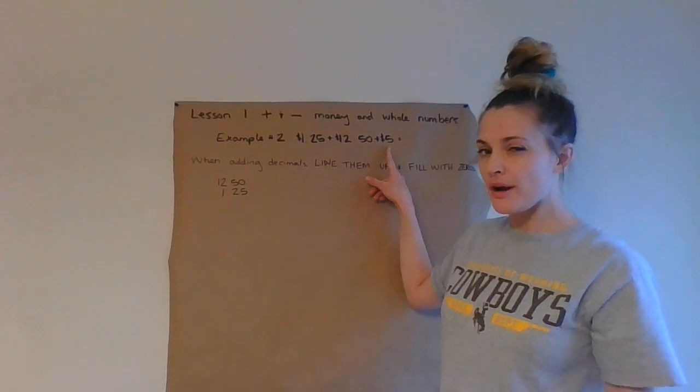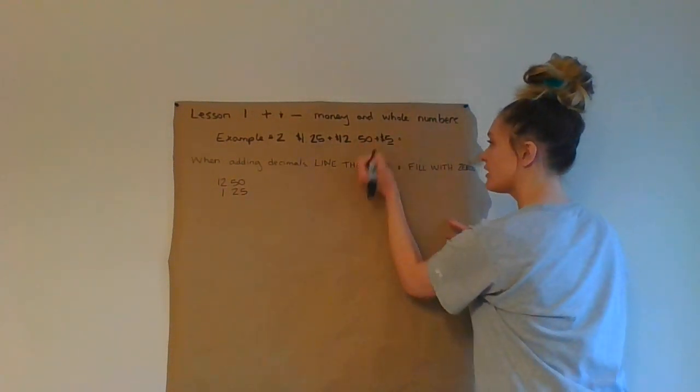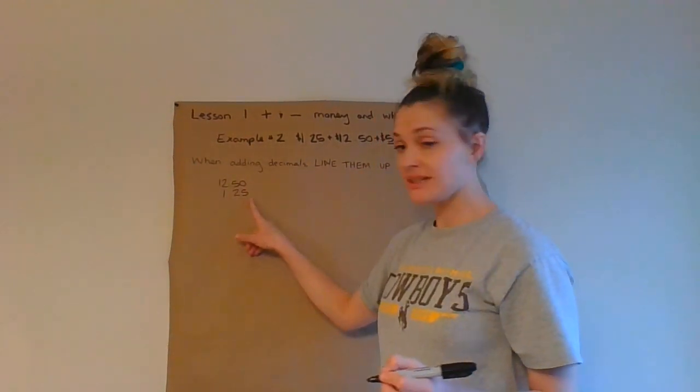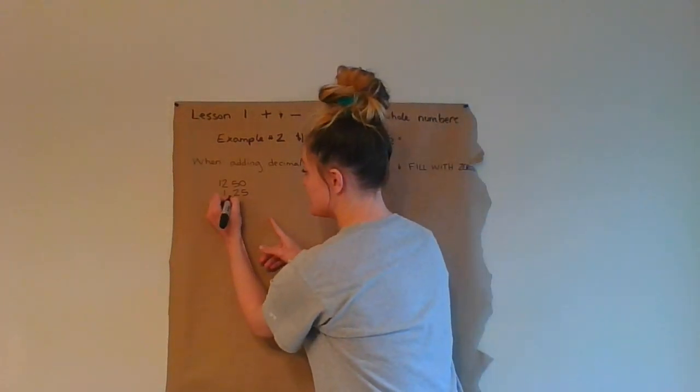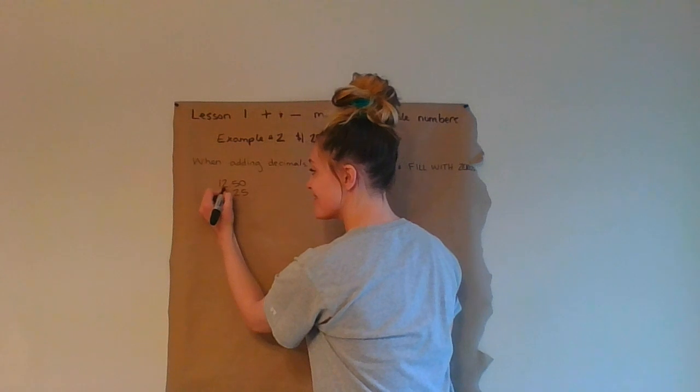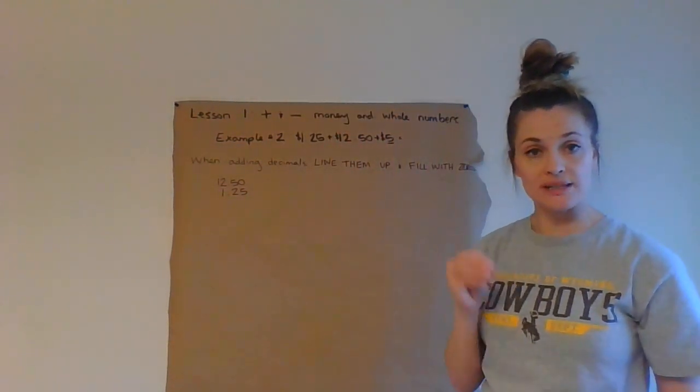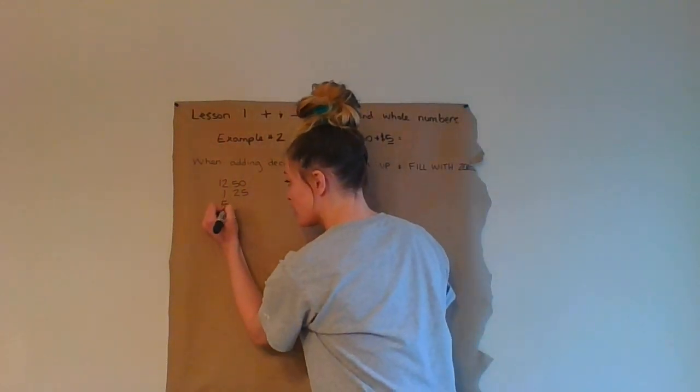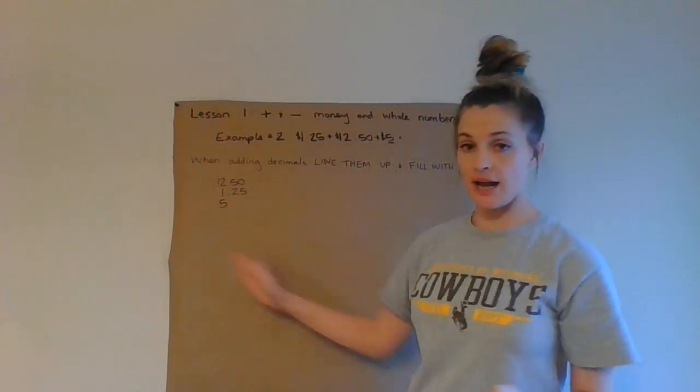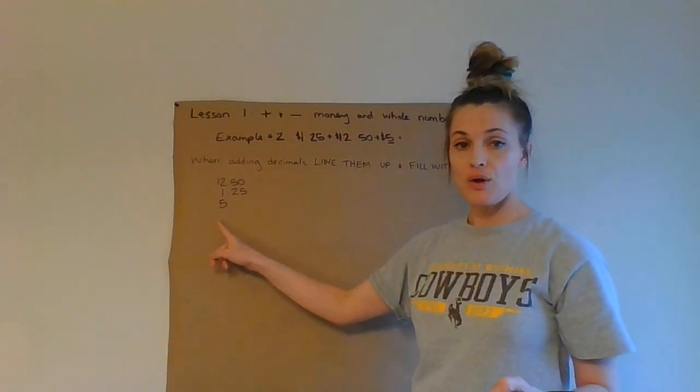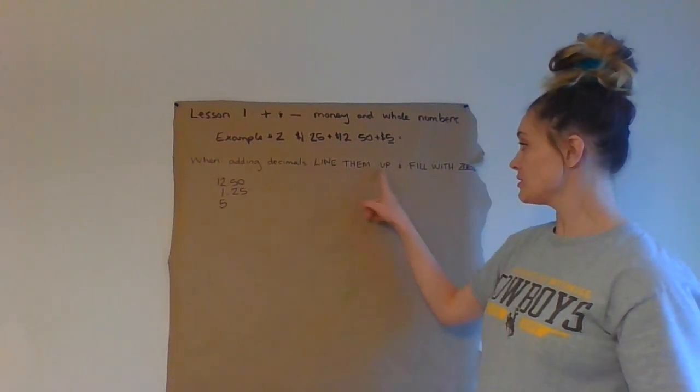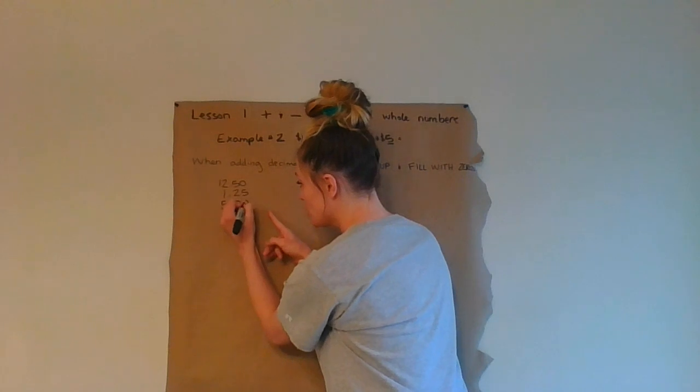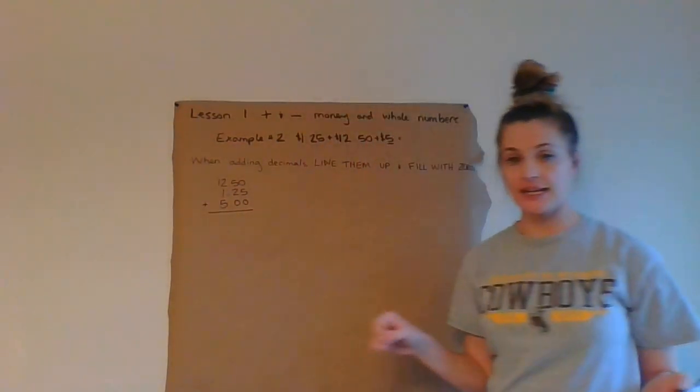Where am I going to put this five? This five is in what place value? The one's place. What place is the one's place here? Here, I've got my decimal here. Therefore, this two, this one, those are the one's place. So you have to line up the five in the one's place. Therefore, my five goes right there. Now that looks kind of awkward, right? It's right in the middle. Well, it says line up the decimals and fill with zeros. So what do I have to do here? I have to fill with zeros. And then I can add them.